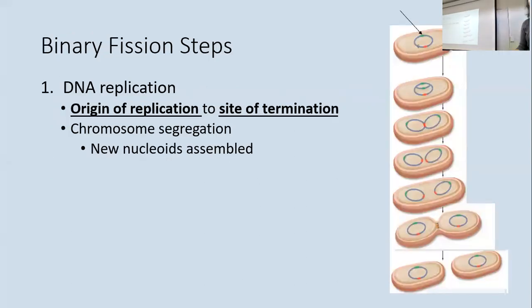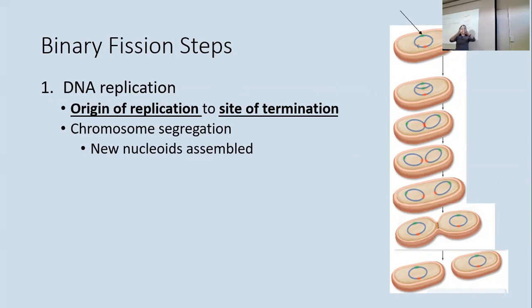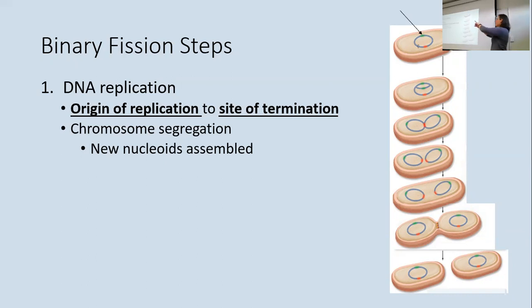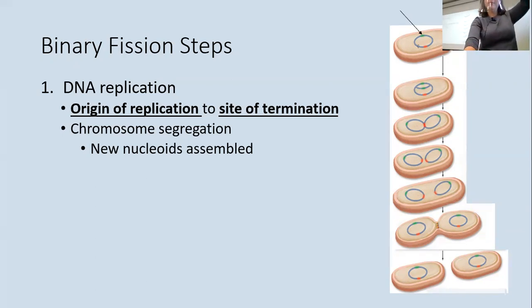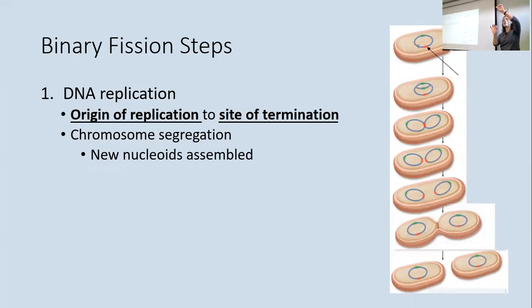In prokaryotes, binary fission is basically a three-step process. You've got a little bacterial cell with no organelles and one single circular chromosome. These circular chromosomes have an origin of replication at the top and a site of termination at the bottom. The DNA starts copying at the origin and copies all the way around to the site of termination, producing two chromosomes.